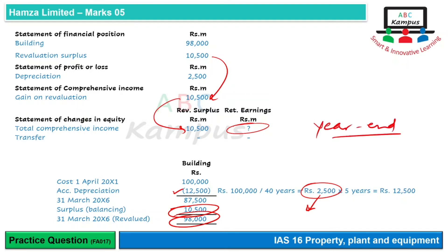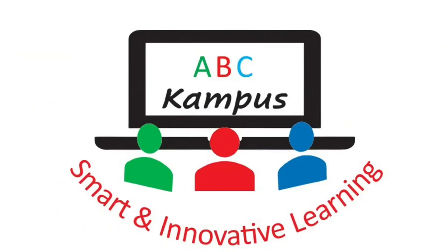Ab year end par revaluation hone ka matlab hai ki jo during the year depreciation charge hui hai wo purani value par charge hui hai, aur revaluation surplus ki wajah se extra depreciation is year mein charge hi nahi hui. Aur jab extra depreciation hi charge nahi hui, to uska transfer record karne ki bhi koi zaroorat nahi hai. So that's why this transfer is simply zero — yahan par hum blank chhod denge. Just for the concept humne mention kiya ki transfer hota hai to yahan show karte hain, lekin yahan show nahi kar rahe kyunki koi transfer is saal mein banta hi nahi. So that's all for today, have a good day.